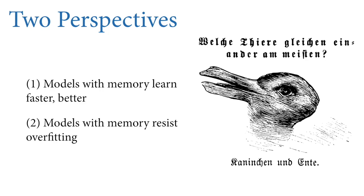It's like that old illustration of the duck and the rabbit — if you look at it one way, it's a duck with the beak on the left, and the other way it's a rabbit with ears on the left. You can think of multilevel models as being superior to single-level models because models with memory learn faster, making more efficient use of the data. The other perspective is that models with memory resist overfitting — they regularize. Both of these things are simultaneously true and arise for the same reasons.